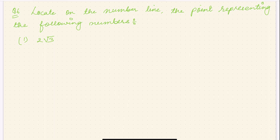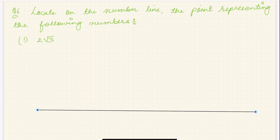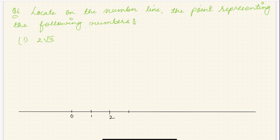We have to represent 2√3 on a number line. It's simple. First, you draw a very straight line, a little bit longer. Now let me give markings: 0, 1, 2, 3, 4, 5, 6 here, and minus 1. I hope you know how to represent all these things.